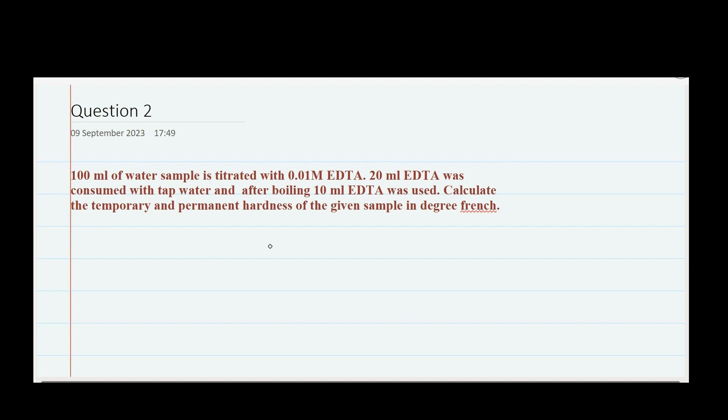This video is intended to solve this question only. So let us go ahead. We have 100 ml of water sample titrated with 0.01 molar EDTA. When the molarity is given as 0.01 molar, there are actually two ways to solve such questions, and I'll tell you both. First I'll solve using the same method as the previous video, and second is a very easy trick I'll tell you at the end.